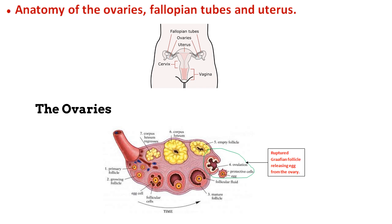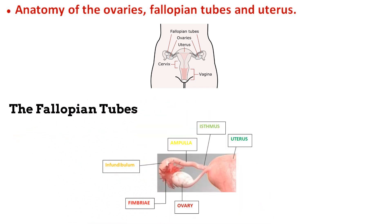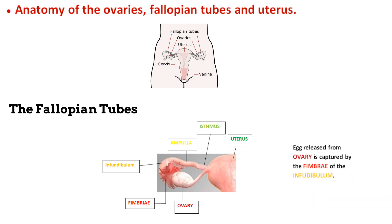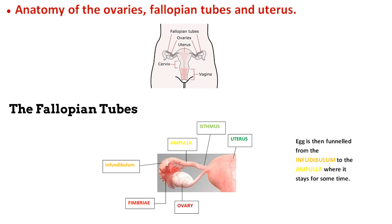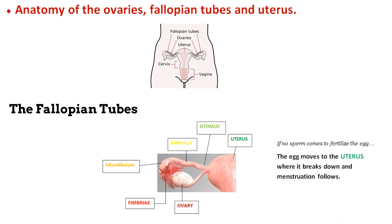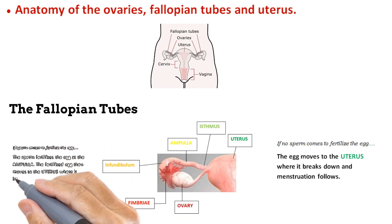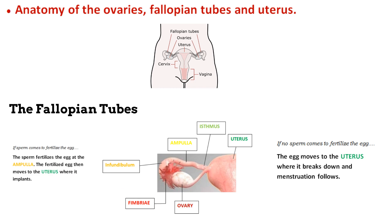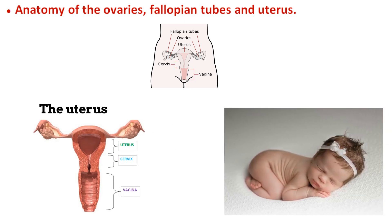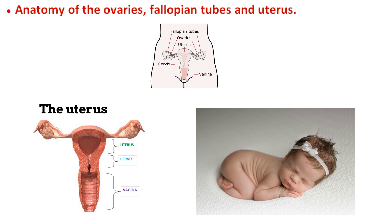The released ovum moves to the nearest fallopian tube. The fallopian tubes are paired and connect each ovary to the uterus. Each has three parts: the infundibulum, ampulla, and isthmus. The infundibulum is closest to the ovary, shaped like a funnel with finger-like projections called fimbriae that capture the released egg. The egg moves to the ampulla, where it waits for a sperm cell to fertilize it. If no sperm comes, it moves to the uterus and menstruation starts. If fertilized, the egg implants in the uterus and pregnancy begins. The vagina and cervix are the passageways from outside to the uterus.